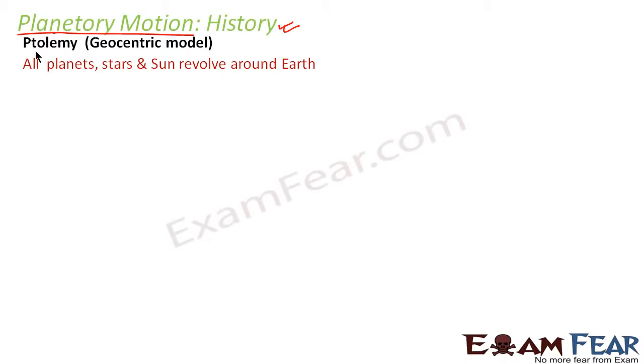The first study on planetary motion was done by a scientist named Ptolemy. He gave a model known as the geocentric model. As the name suggests, geocentric means geo plus centric - geo means earth, centric means center. This model stated that all the planets, stars, and even the sun revolved around the earth. Earth was at the center and everything revolved around it.